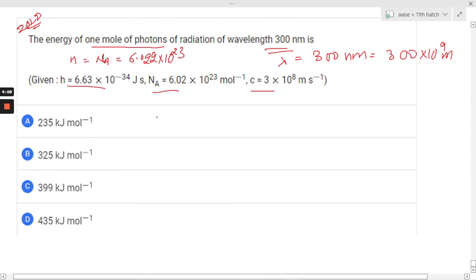So when we are going to calculate the energy of photons, for calculating the energy of one photon is E equals hc by lambda. And for calculating n number of photons we have the formula n hc by lambda.